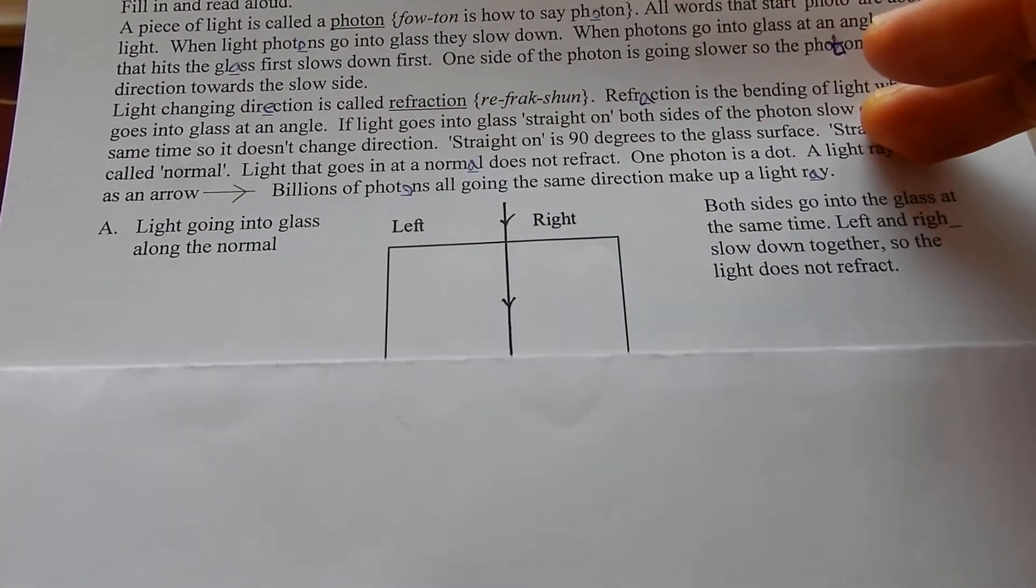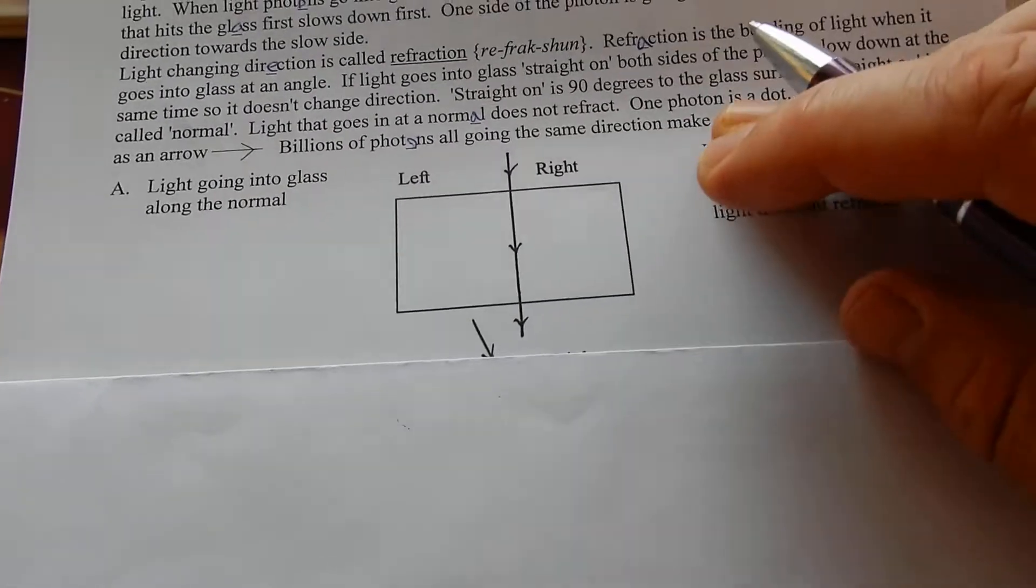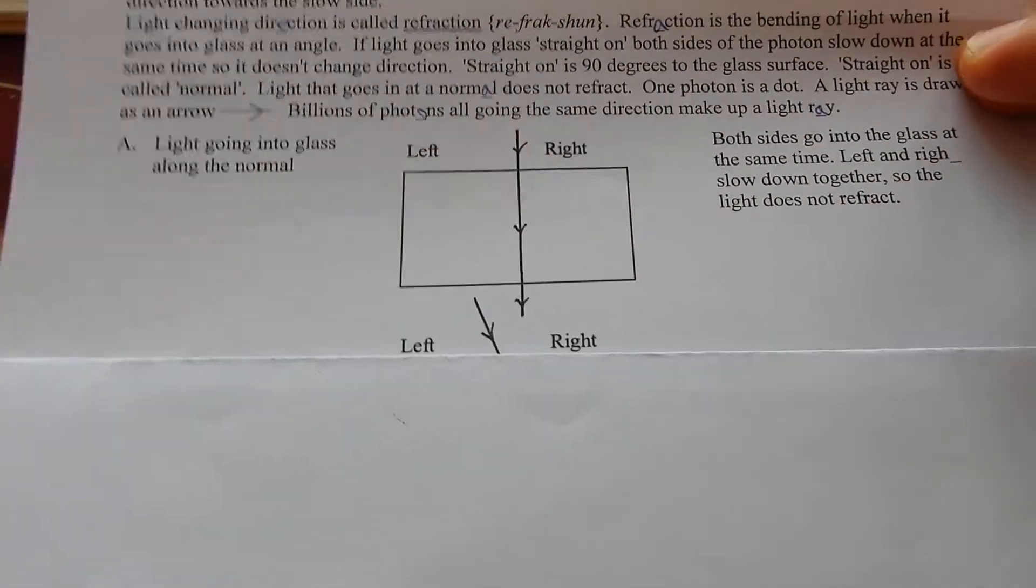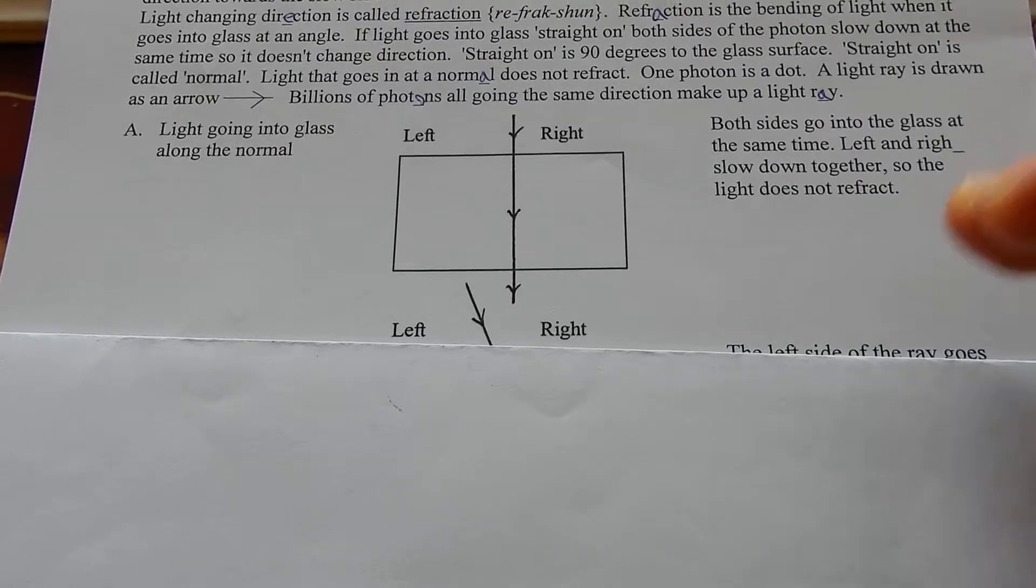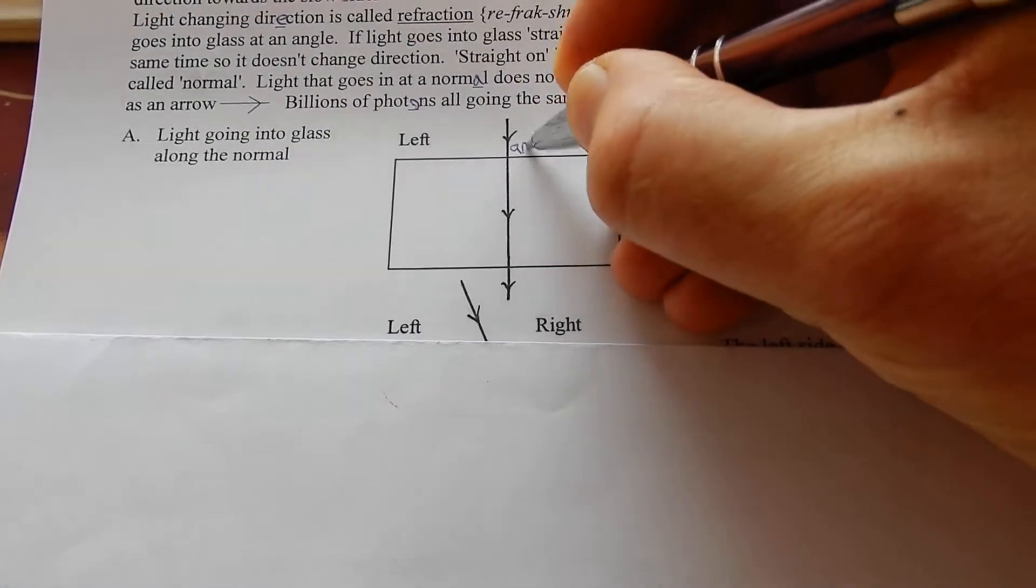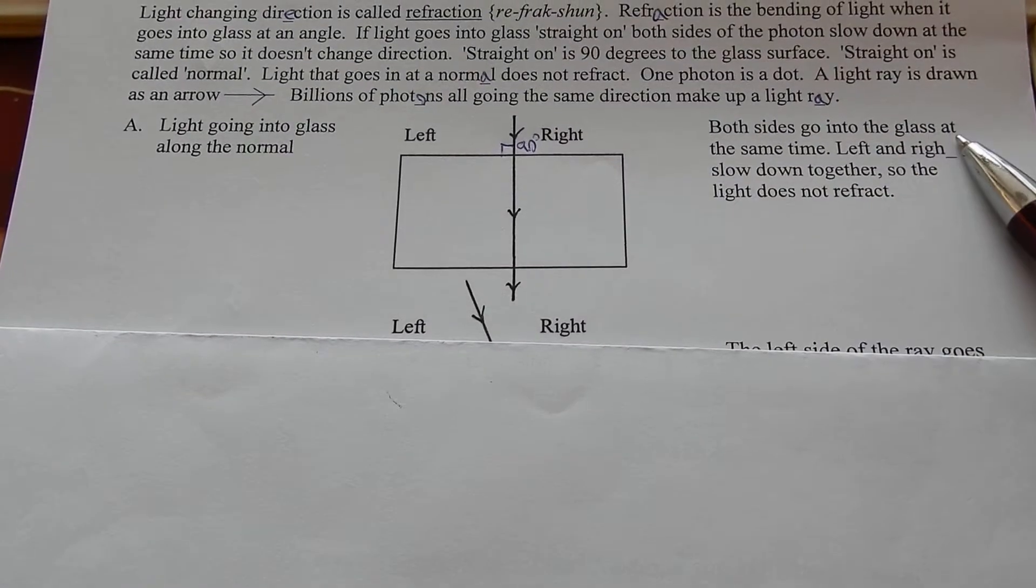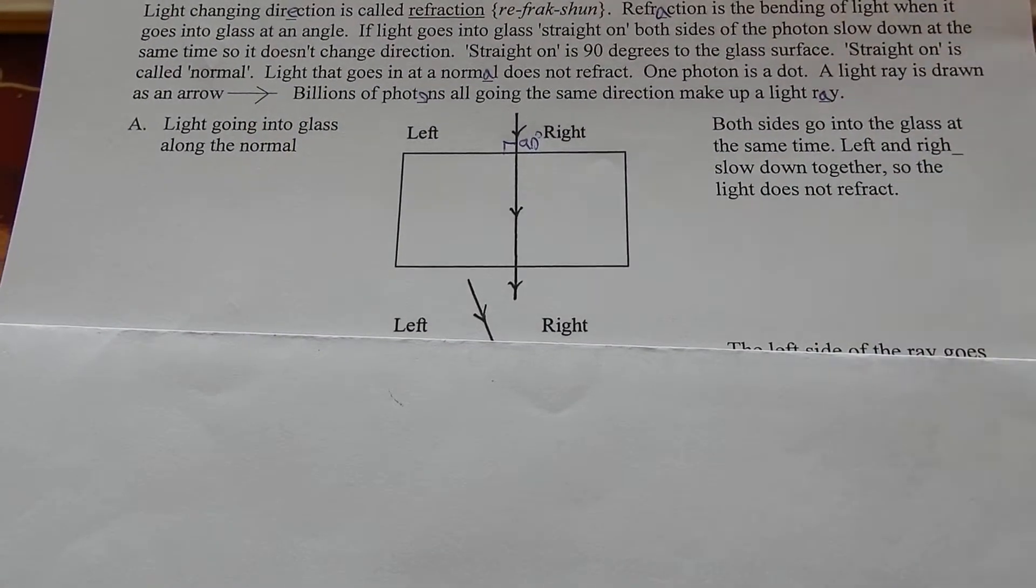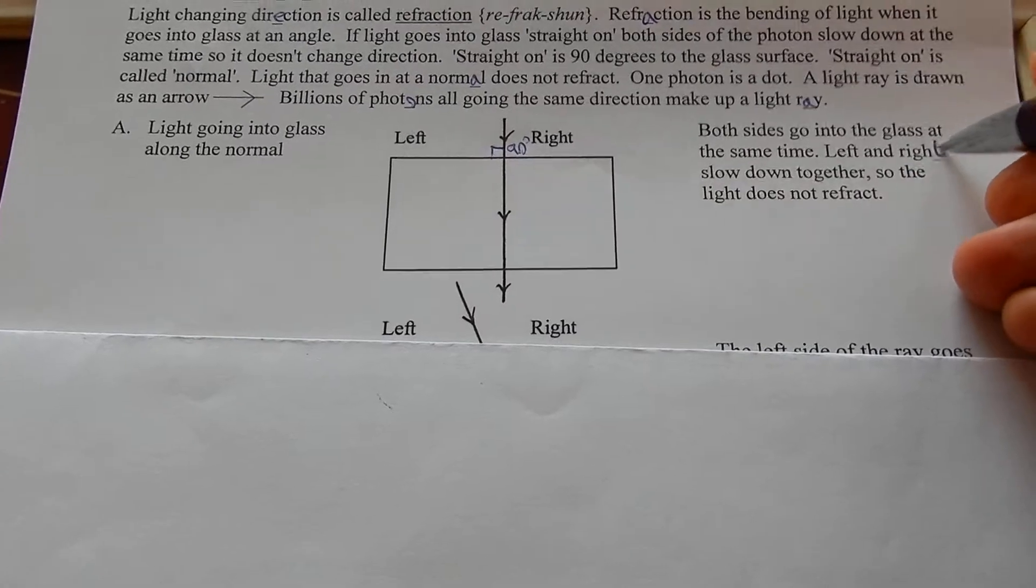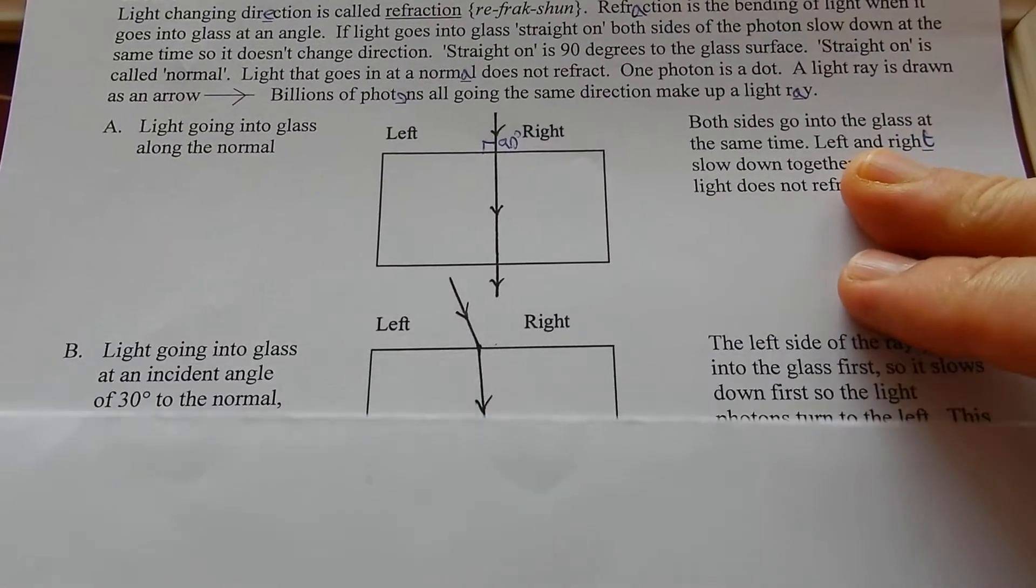Light going into glass along the normal, normal because that's 90 degrees. That's 90 degrees there. Both sides go into the glass at the same time. Left and right slow down together. So the light does not refract.